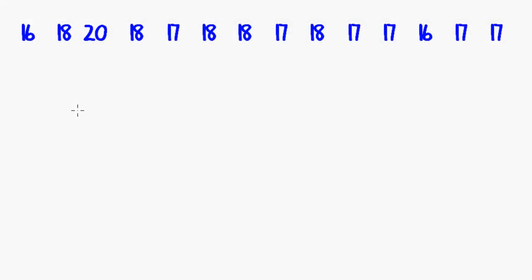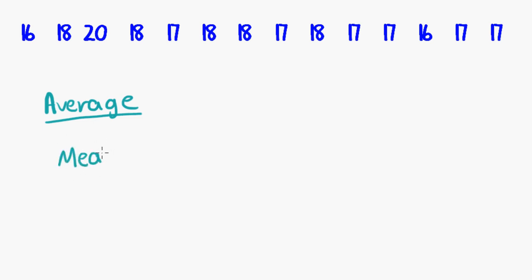First, let's look at the mean, because this is one that we calculate in everyday life quite often, and that is because it is the average. So in everyday life we call this the average, and in statistics — in the core, in further maths — we're going to be referring to this as the mean more often than not. The way that you calculate the average or the mean is to add together, so sum up all of the data that you have, and then divide by the number of data points that there are.